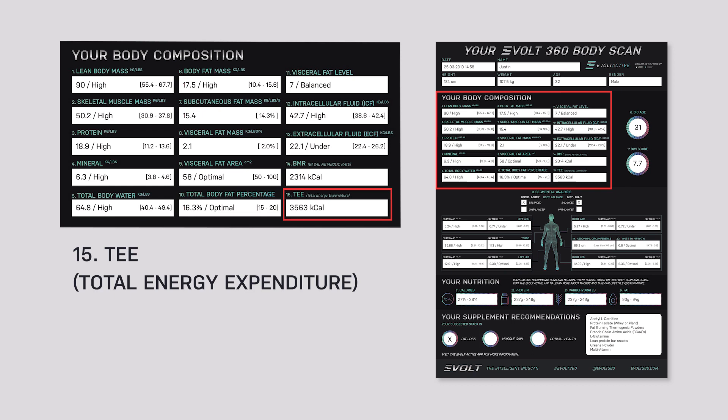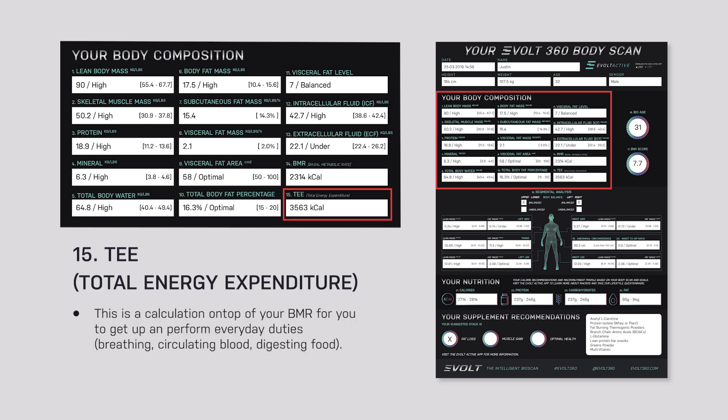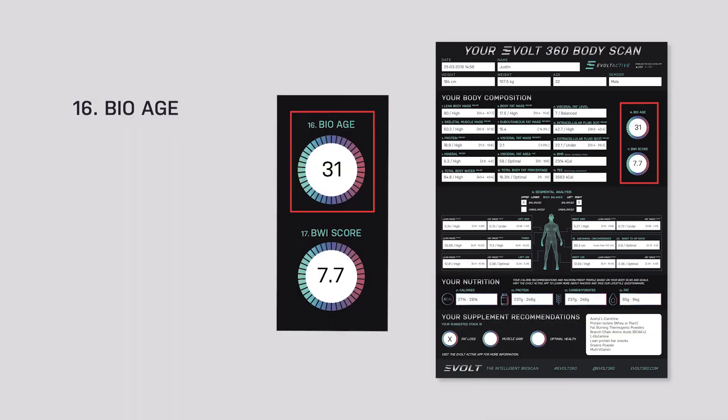Then we go to total energy expenditure. This is a calculation on top of your basal metabolic rate for you to get up and perform normal duties, not actually including extra exercise. I'll explain later how we can be more precise with our calories by putting our exercise level into the app — that will give us exactly how many calories to consume for our goals and body type.